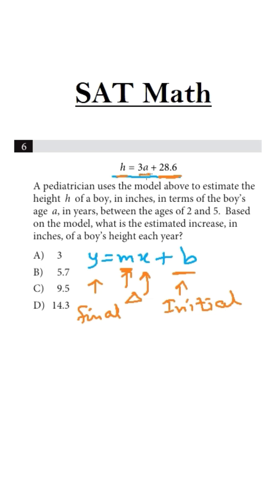In this case, here we have 3a as the change, and a is the age in years. So after every one year, the height increases by 3. That is the meaning of this change.